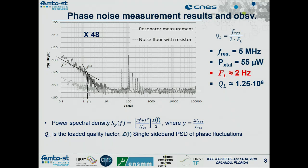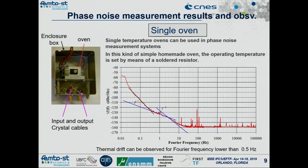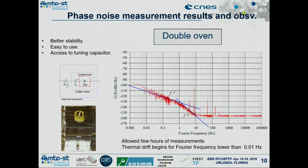Since our resonator is a bulk acoustic wave quartz crystal resonator, we maintain it at a controlled temperature using an oven. A single oven allows a 1/f slope down to about 0.5 Hz. To reach lower frequencies, we used a double oven, which allowed us to observe the 1/f curve for one hour of measurement down to around 10⁻² Hz — which is what we required.